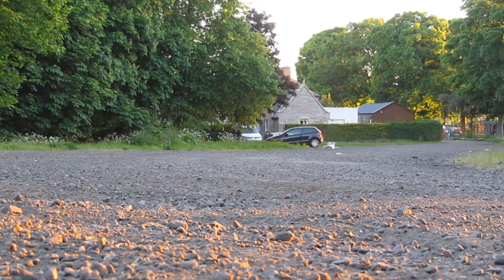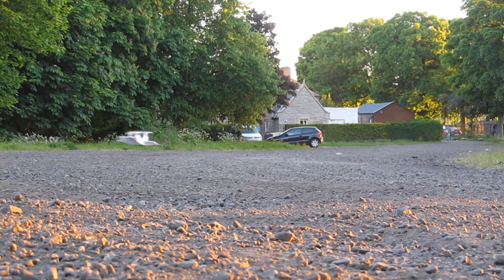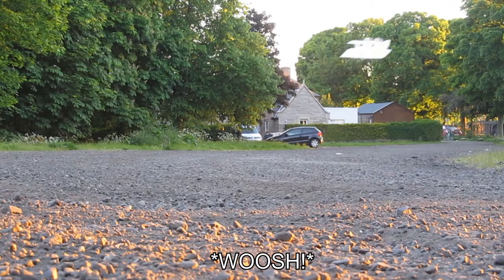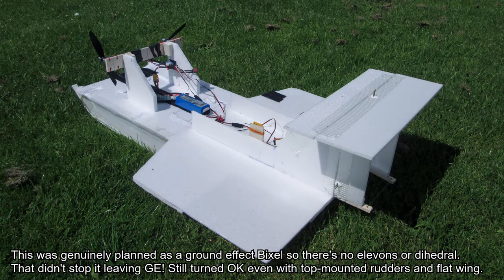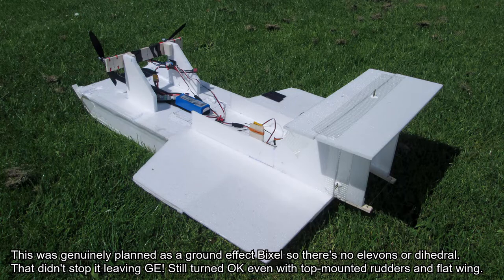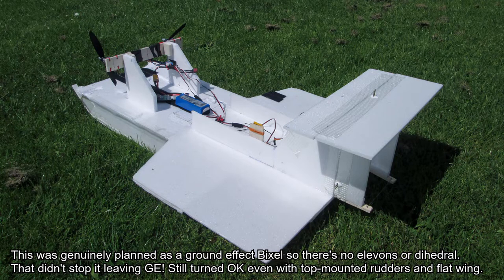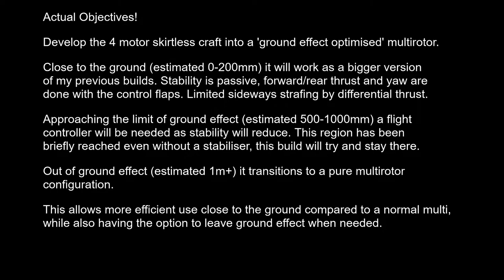The analogy to a ground effect vehicle - this ground effect multirotor will be more efficient in the ground effect range, but if needed, at least the option is there to leave it. And like a ground effect vehicle that might be flying out of ground effect, not going to be as efficient as a multirotor in the free air, definitely not with the weight and drag of the hull. But likewise, a multirotor at thrust to weight of 0.5 isn't very efficient because it can't move. So that's where I'm going.